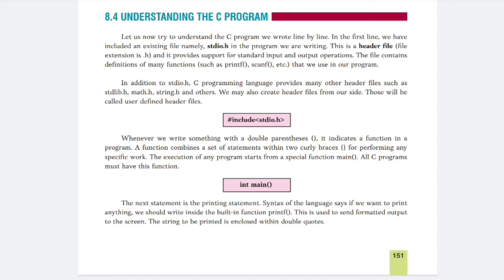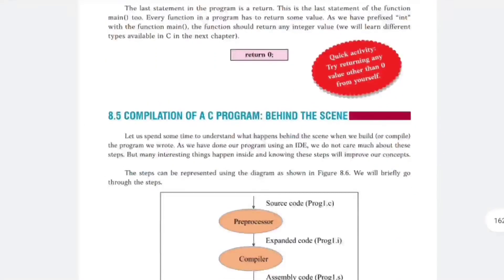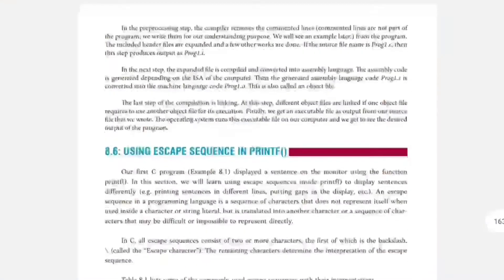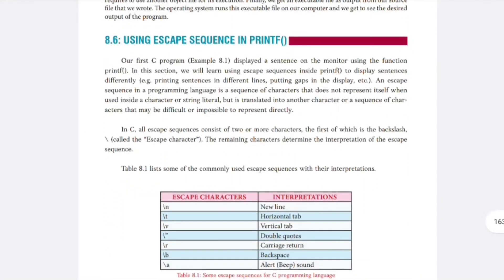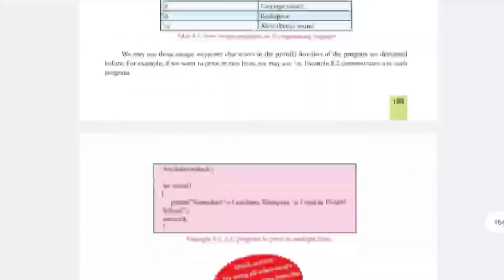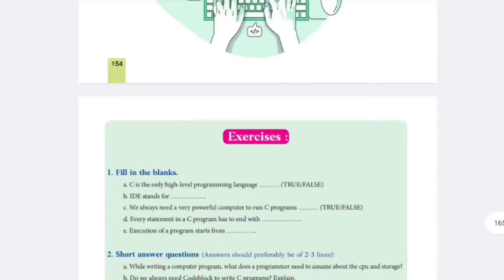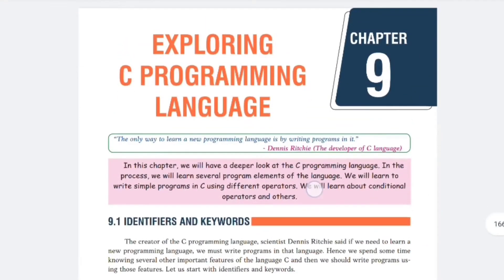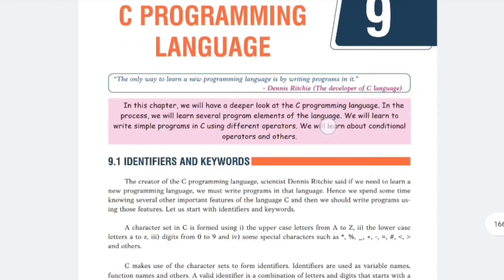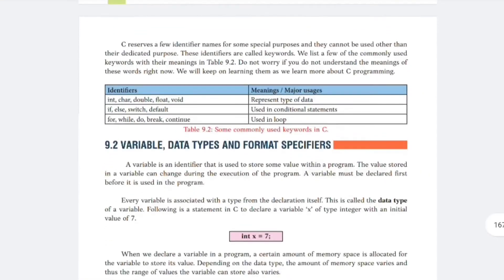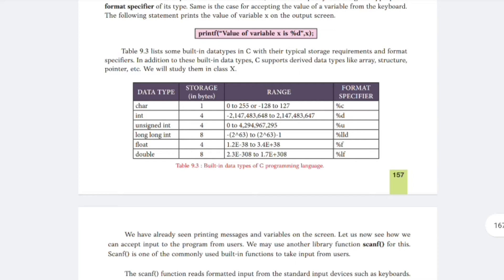Why is the main function important? You will say it is the point from where the compiler starts compiling. Know the definitions of object code, source code, and table code. printf is used to display output to the screen. scanf is used to take input from the user. Moving to Chapter 9, Exploring C Programming Language — topics include character set, variables, different types of variables, identifiers, and data types.